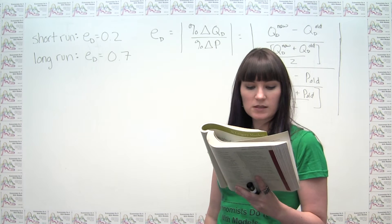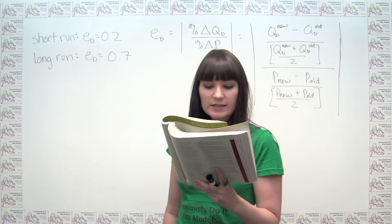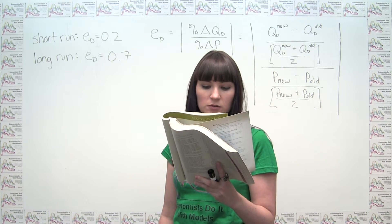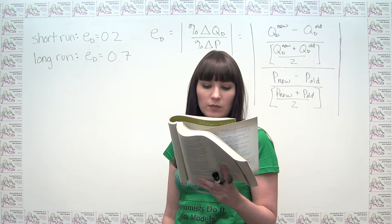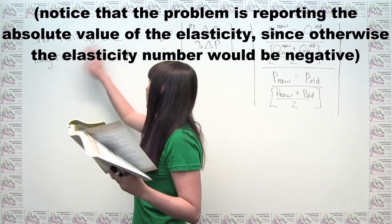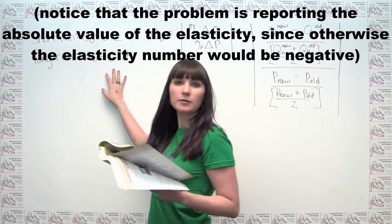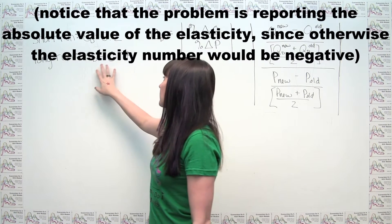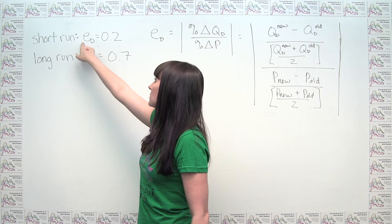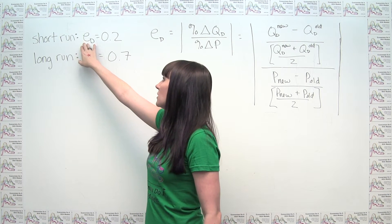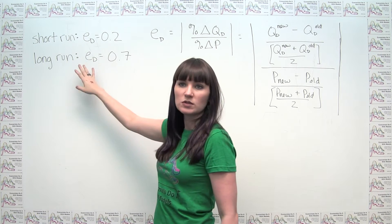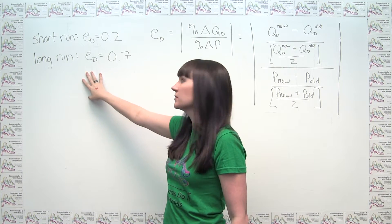This problem says: suppose the price elasticity of demand for heating oil is 0.2 in the short run and 0.7 in the long run. As a reminder, price elasticity of demand is usually noted by lowercase e with a d subscript.